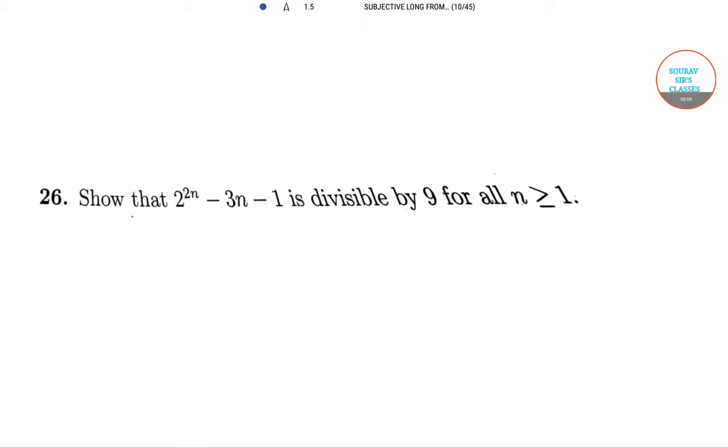Now, in this question, we have to show that 2 raised to the power 2n minus 3n minus 1 is divisible by 9 for all n greater than or equal to 1.